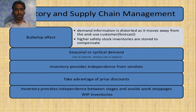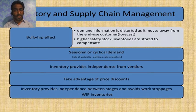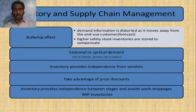Regarding inventory and supply chain management, the bullwhip effect occurs when demand information is distorted as it moves away from the end-user customer. High safety stock inventories are stored by composite and comfort stores to compensate for seasonal or cyclical demand — sales of umbrellas, dominoes, and weekend sales are good examples of seasonal and cyclical demand. Inventory also provides independence for vendors taking advantage of price discounts and provides independence between stages to avoid work stoppages.